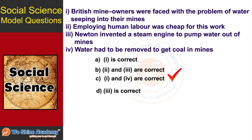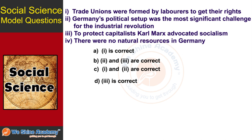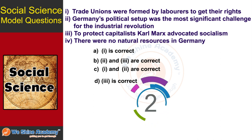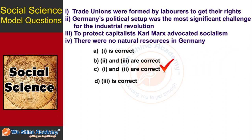The next question is: Find out the correct statement. First: Trade unions were formed by laborers to get their rights. Second: Germany's political setup was the most significant challenge for the industrial revolution. Third: To protect capitalists, Karl Marx advocated socialism. Fourth: There are no natural resources in Germany. The answer is the first and second are correct.